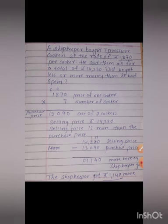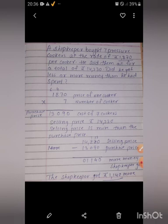A shopkeeper bought 7 pressure cookers at the rate of rupees 1870 per cooker. He sold them all for a total of rupees 14,230. Did he get less or more money than he had spent? Shopkeeper bought how many cookers? 7 cookers. Each cooker cost rupees 1870. First, we find the cost of 7 pressure cookers.